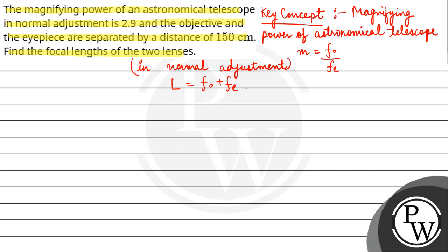So here, the magnifying power M given is 2.9, which is equal to F_o upon F_e. So we can say that F_o is equal to 2.9 F_e.